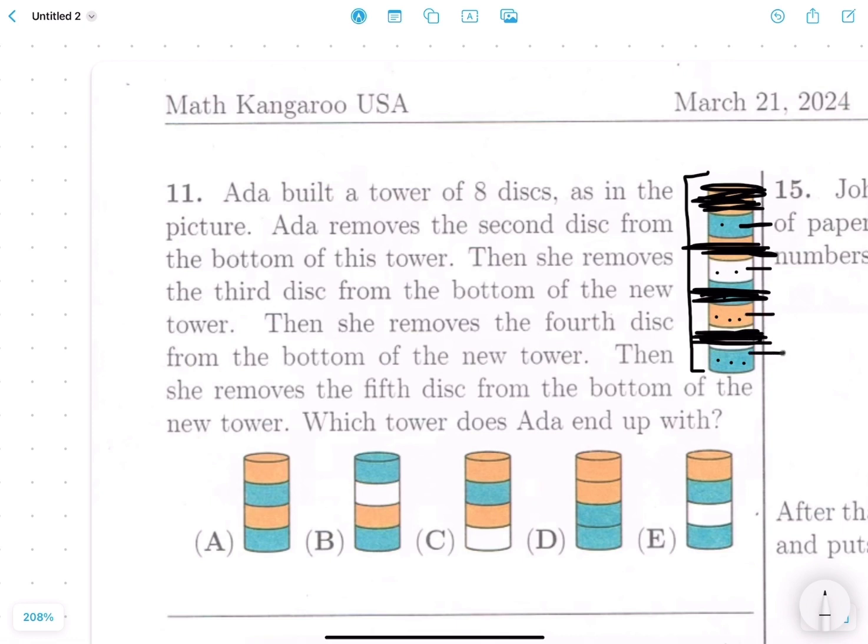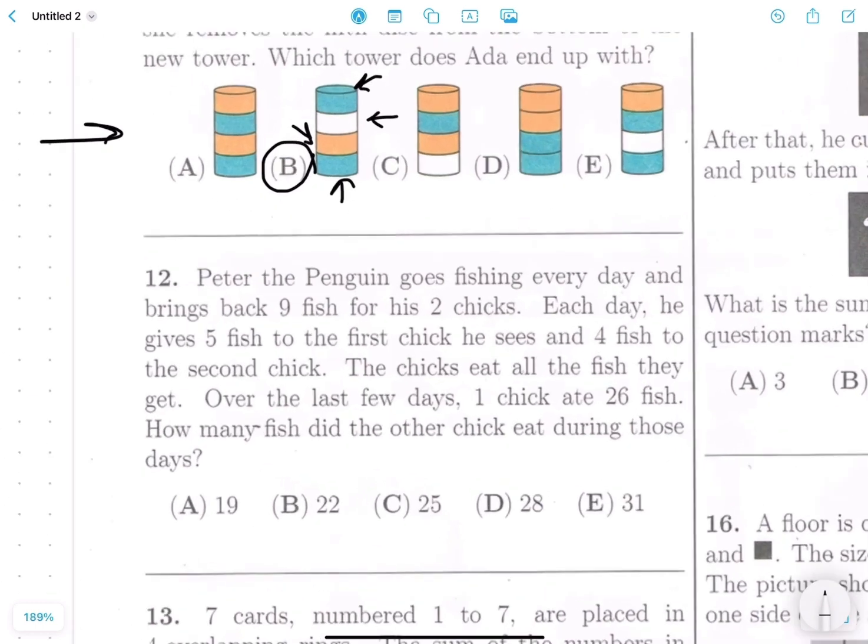Out of all of these answer choices, only this one has a blue disk on top and a blue disk on the bottom. And then it satisfies the rest of our requirements, too. So the answer for problem number 11 is B. On to the next one.